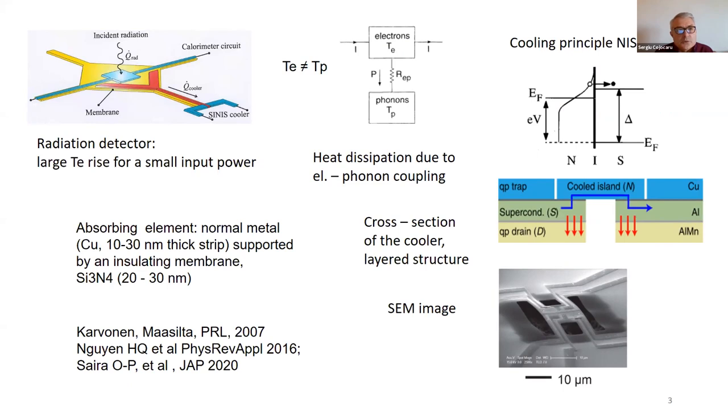The absorbed radiation, as this is a metal strip, primarily goes into the electronic subsystem, which has low heat capacity, and that's why it increases rapidly its temperature relative to the crystal lattice. Here you see the difference. This difference drives the flux between the two subsystems.